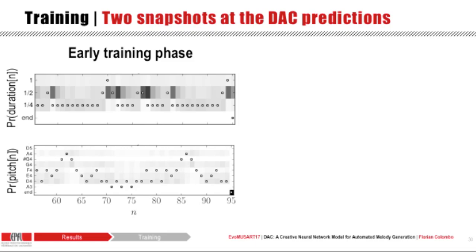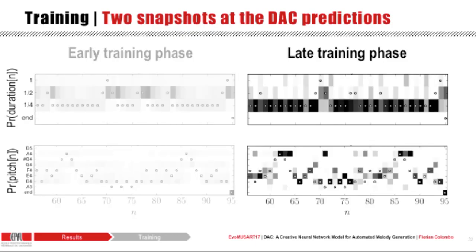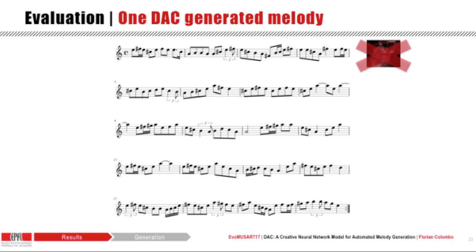When the model is generating a melody at this early stage, we obtain this kind of music. It certainly is interesting, but not Klezmer or Irish. At later stages of training, the Deep Artificial Composer has understood some patterns and is able to make more confident decisions, which most of the time are the same that a human composer would have taken. One melody generated from the trained model looks like this.